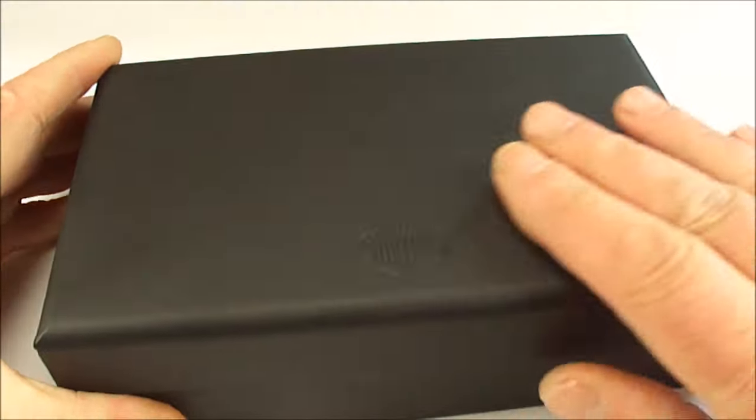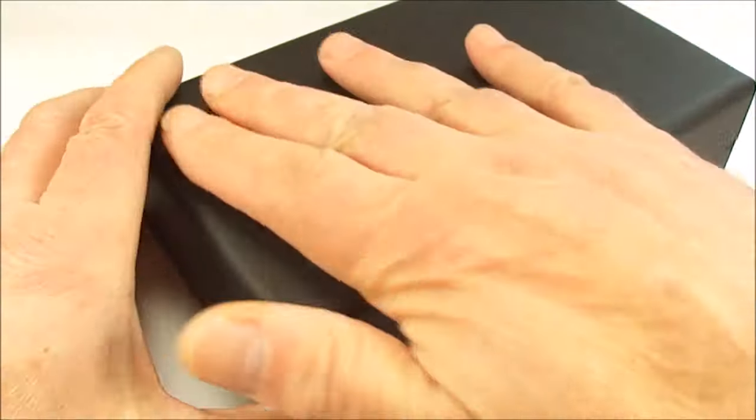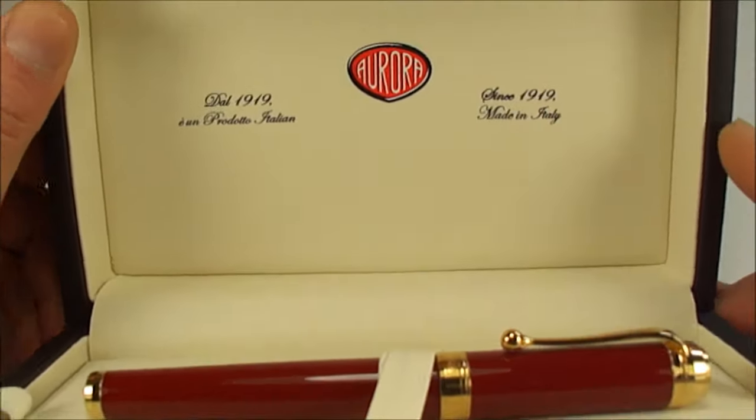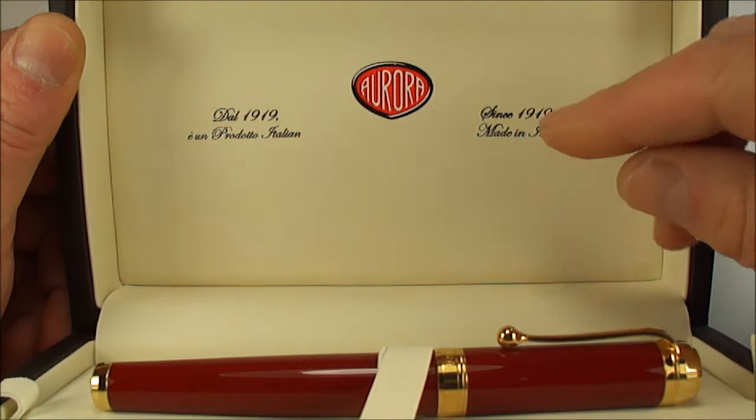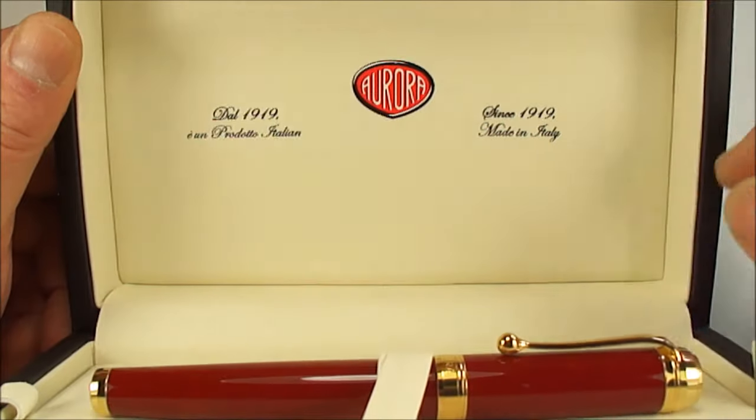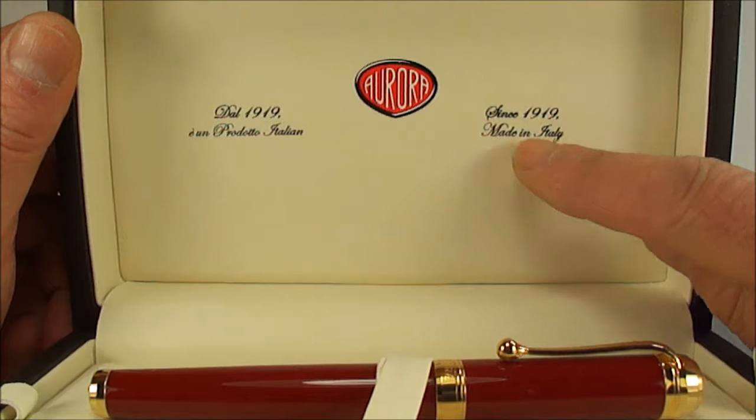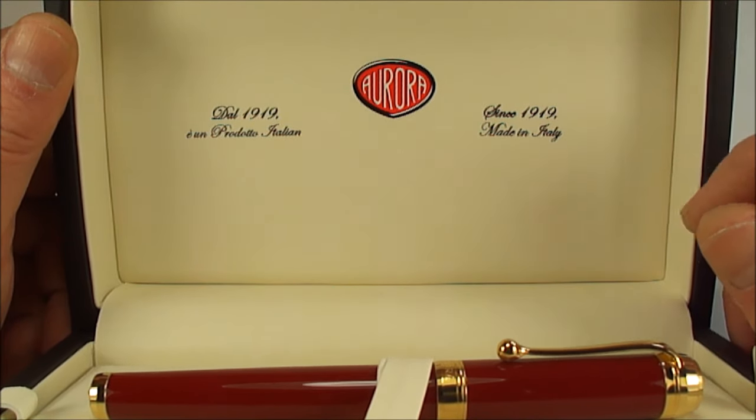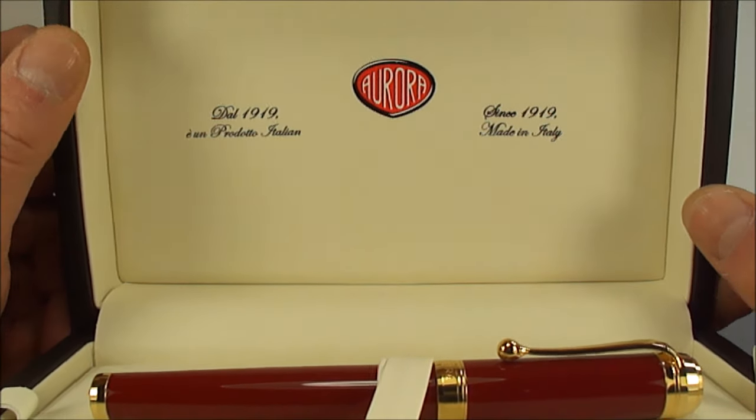Here we have the pen. It comes in this lovely leather outer case which is spring loaded, and if we show you inside you can see it's got Aurora. Aurora were making pens from as early as the 1990s, and these pens were produced, as it says there, made in Italy and they're actually made in Turin to be more precise.